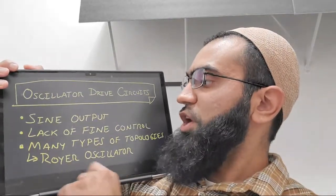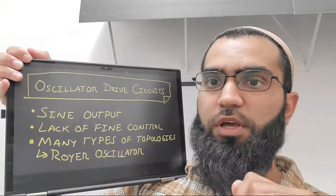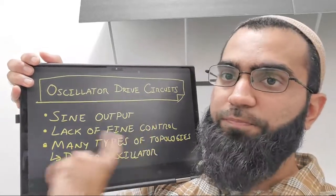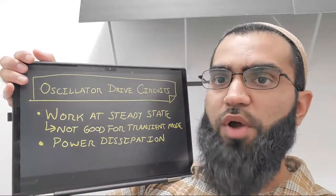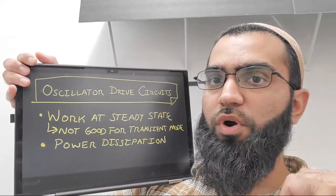The next point is there's a lack of fine control. With op-amp and bridge drive circuits, you have direct control over frequency and can easily integrate measurements into how you control frequency or amplitude. However, this oscillator type doesn't lend itself well to controlling those parameters. There are many topologies, but the most commonly implemented one is called the Royer oscillator. The drive circuit works at steady-state behavior, so it's not very good for transient mode operation.